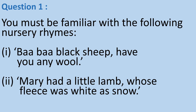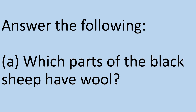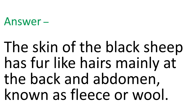Let's start with Question 1. You must be familiar with the following nursery rhymes: the first one, 'Baa Baa Black Sheep, have you any wool?' and the second one, 'Mary had a little lamb whose fleece was white as snow.' Part A: Which parts of the black sheep have wool? Answer: The skin of the black sheep has fur-like hairs mainly at the back and abdomen, known as fleece or wool.